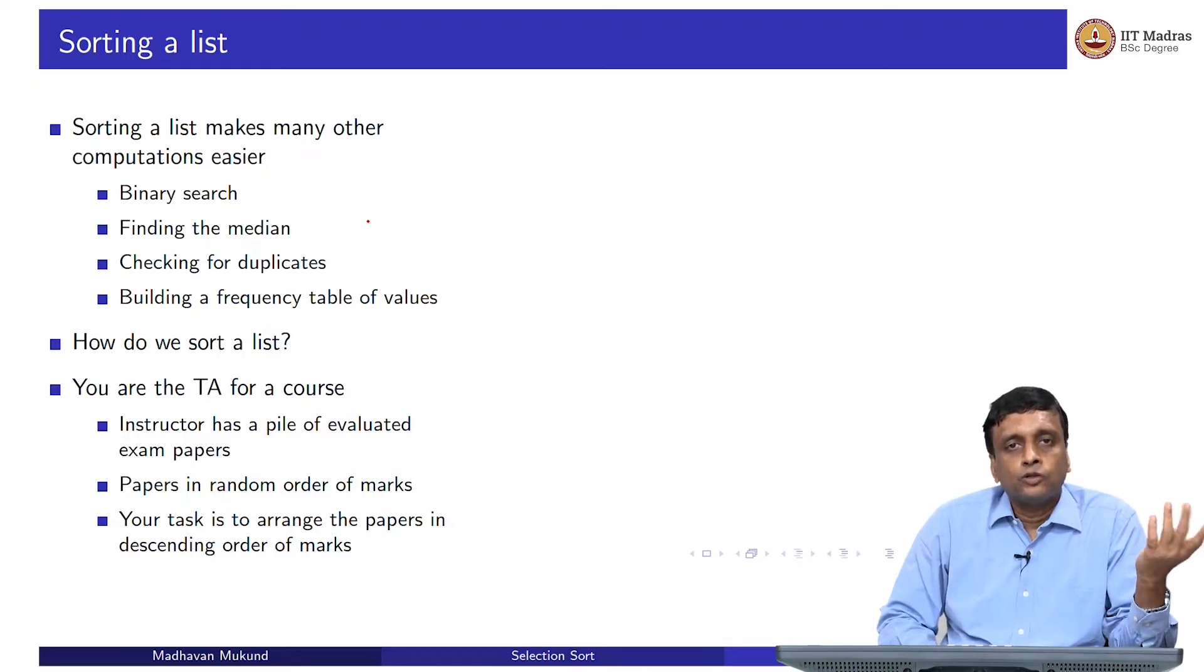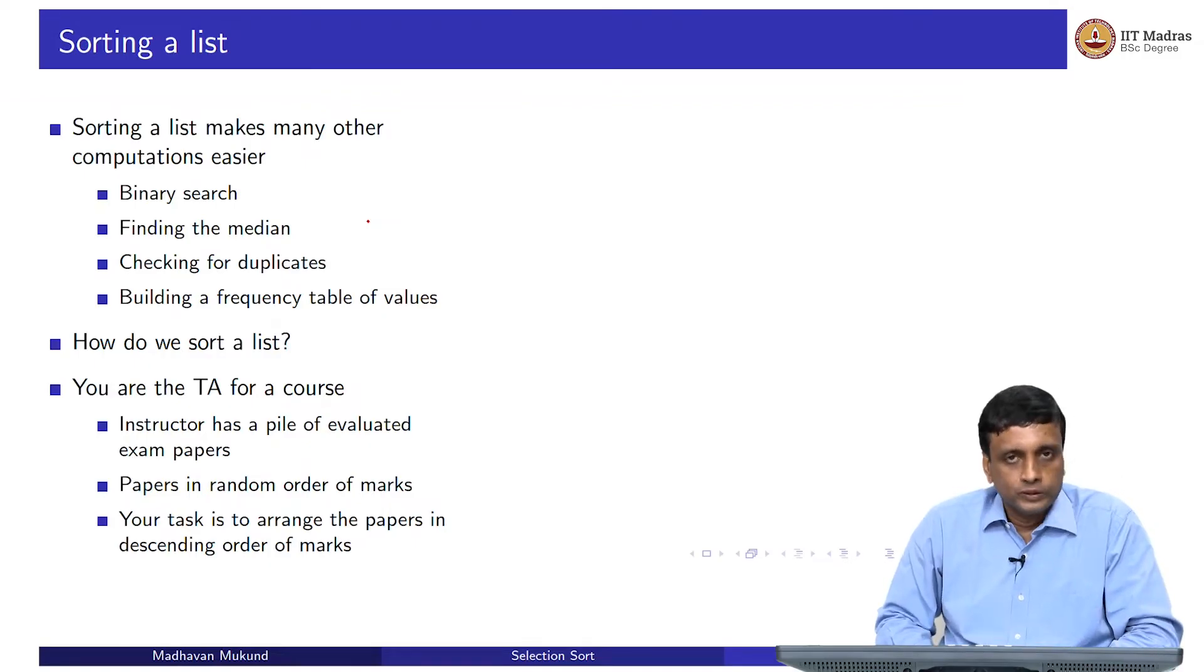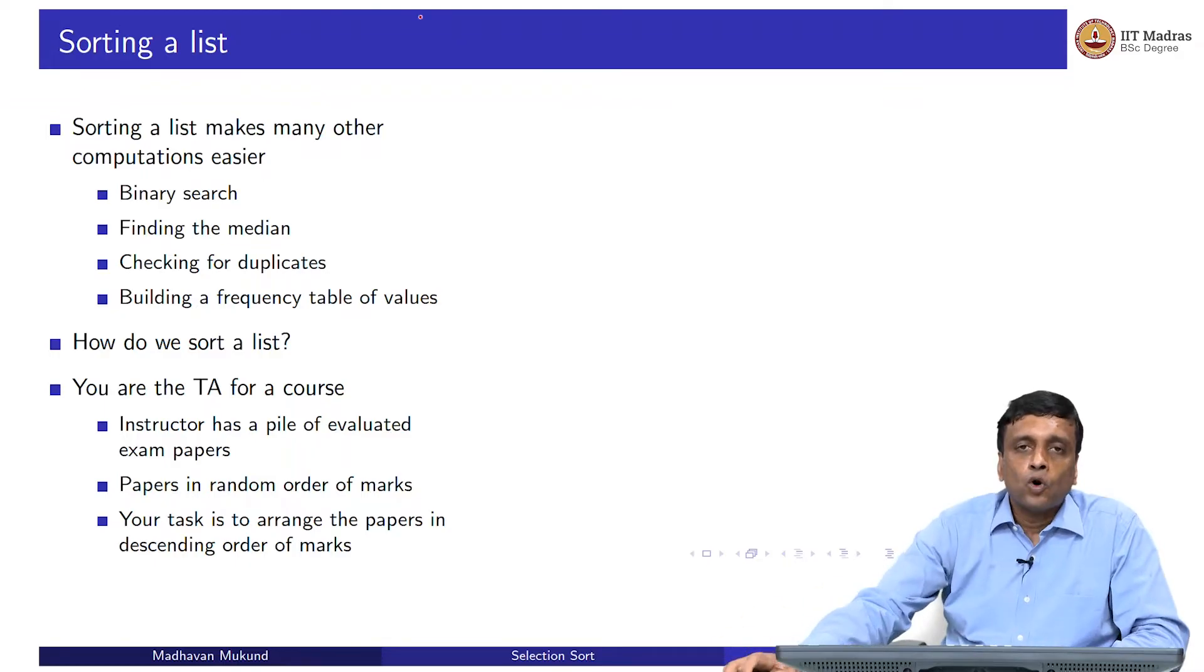Now what the instructor would like to do is assign grades. You need to sort the papers in ascending or descending order. Let us say you want the highest on the top, so descending order. Now as the TA, it is your job to do this. You are given this huge stack of exam papers and you are asked to sort it in descending order with the highest marks on the top. How would you go about it?